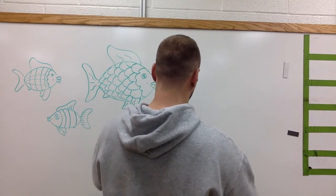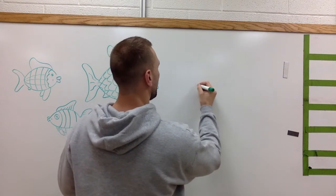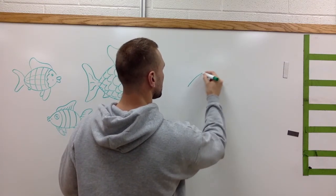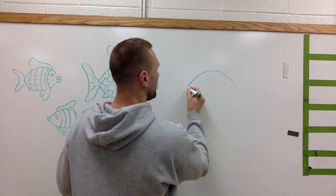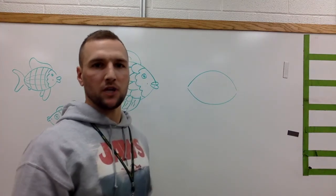So the first thing that you're going to want to do is make kind of an oval shape, except you're gonna make a curved line one way, curved line the other way. So it's more like a football shape, I would call it.